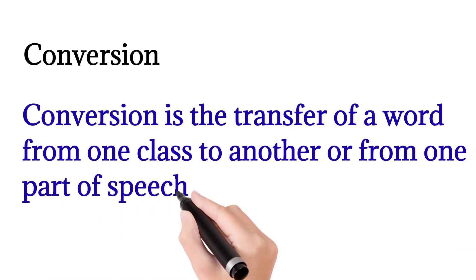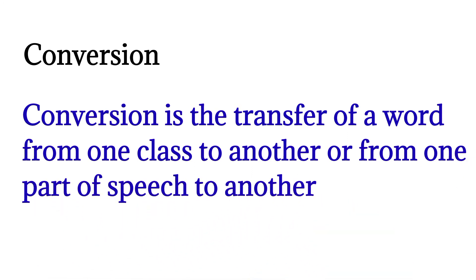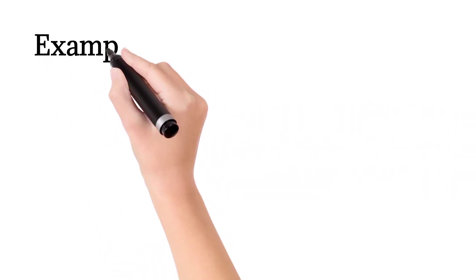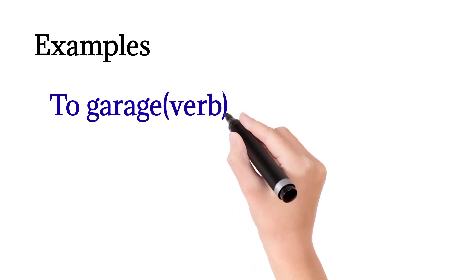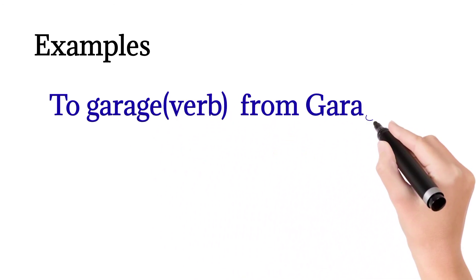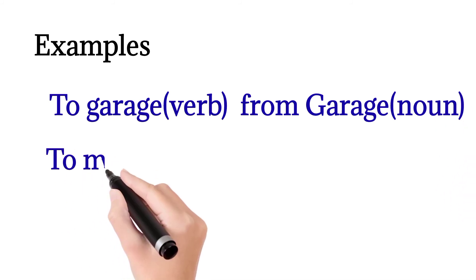Aa jayegi. To yeh jo conversion of words hai, is ko hum kehte hain conversion. 'To garage' verb tha, is ke transformation hui, conversion hui from garage mein to noun ban gaya. 'To man' is a verb, is ki.